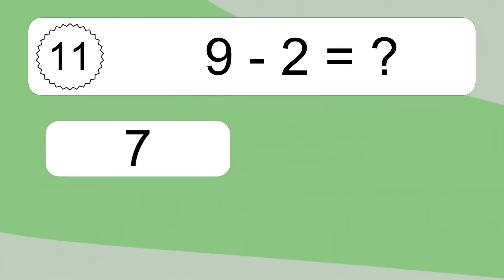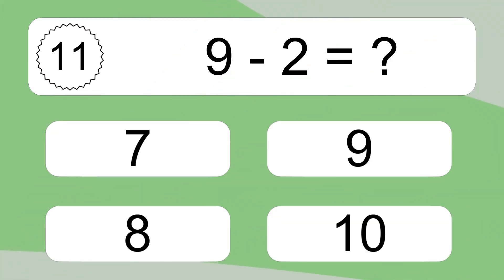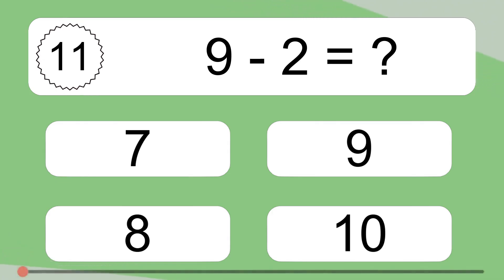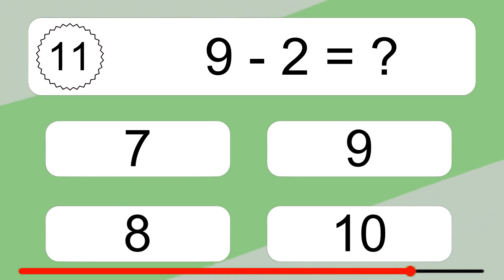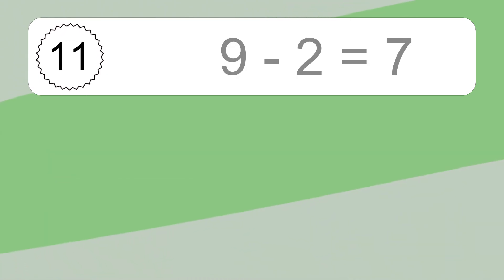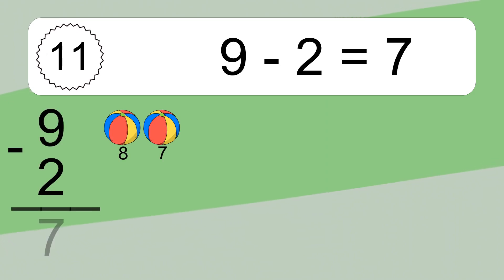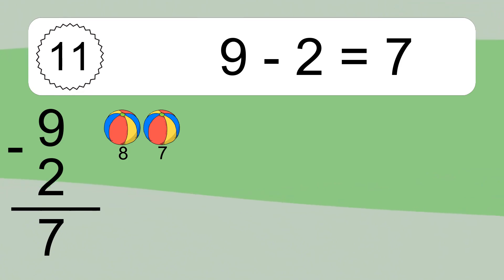9 minus 2 equals what? 9 minus 2 equals 7. Let's count it. 8, 7.